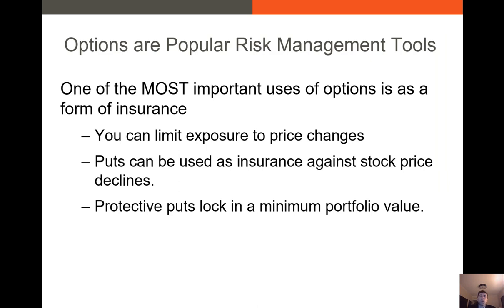So what else should you know about options? First and foremost, options are one of the most popular risk management tools in investments. Downside risk is one of the most important uses of options. Put options, especially, act as a form of insurance for individuals. Put options will limit your exposure to declines in share prices of an asset that you own. When you buy a put option — or as we call them, protective puts — you're essentially locking in a minimum portfolio value. If the value of the underlying asset falls, you just exercise your put and sell for whatever the strike price is.